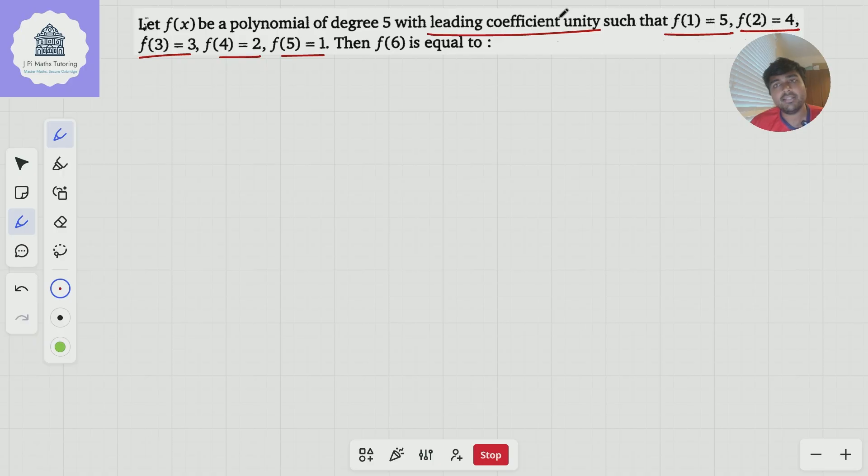So in other words, it's a monic polynomial. The leading term has coefficient 1. And the question is, what is f of 6?